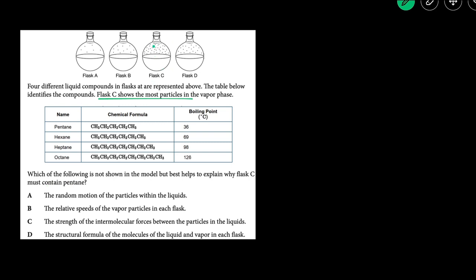So we're told that flask C contains the most pentane vapor above the liquid, so that means that pentane has the highest vapor pressure because vapor pressure is just related to the number of particles above a liquid in equilibrium.